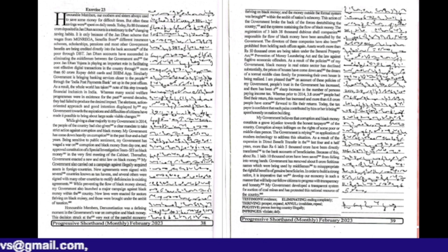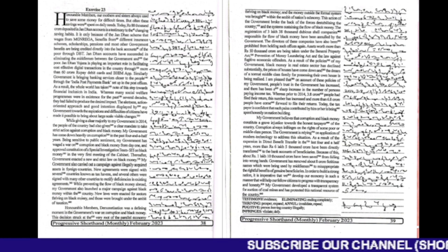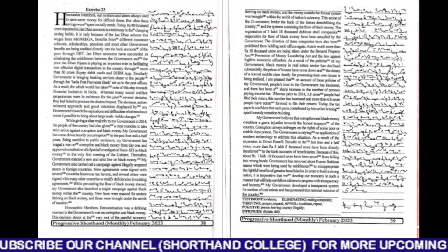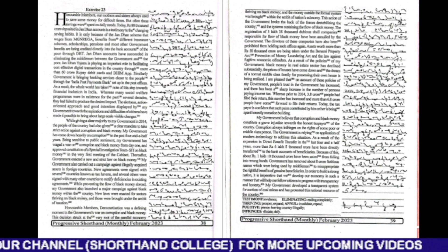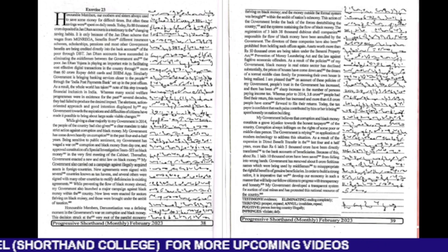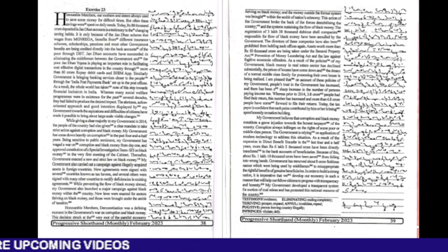As a result of the expansion in direct benefit transfer in the last 4 and a half years, more than Rs. 6,05,000 crore have been directly transferred to the bank accounts of beneficiaries. Because of this, about Rs. 1,10,000 crore have been saved from falling into wrong hands.